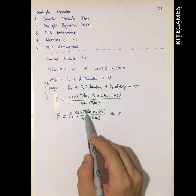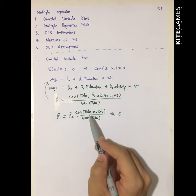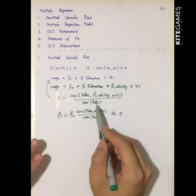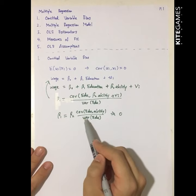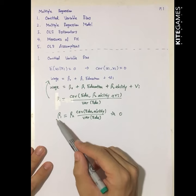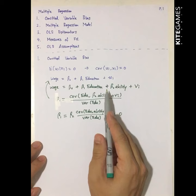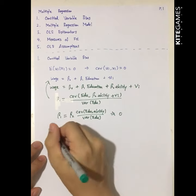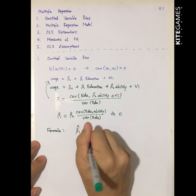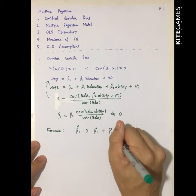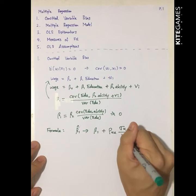The covariance of education and ability may not equal zero — more education may raise ability, or higher ability may lead to better education. If ability is a key determinant so that beta 2 is not equal to zero, then beta 1 hat captures something not in the model. We have a mathematical formula for the omitted variable bias: beta 1 hat converges to beta 1 plus the correlation between U and X times the standard deviation of U divided by the standard deviation of X.